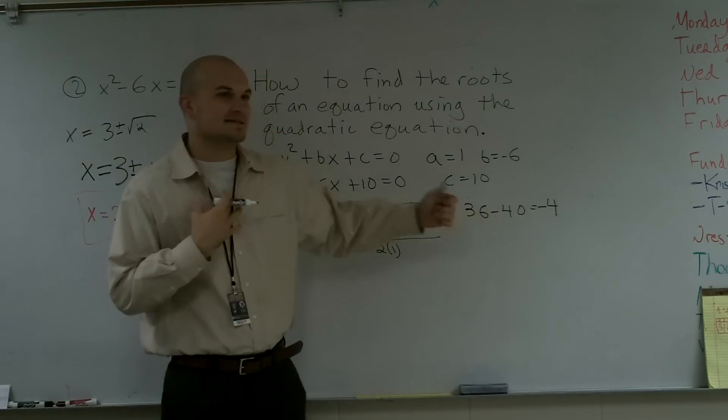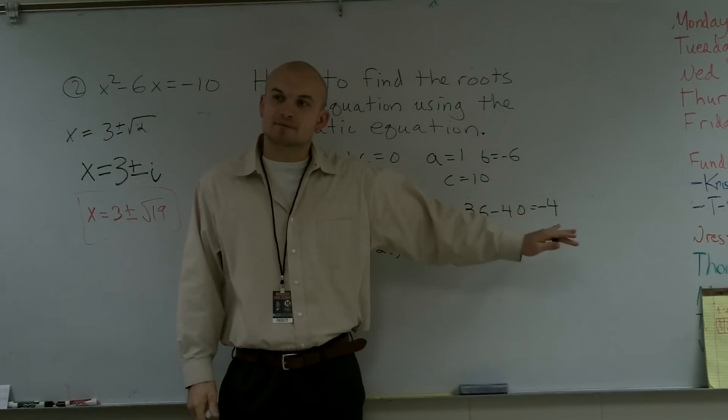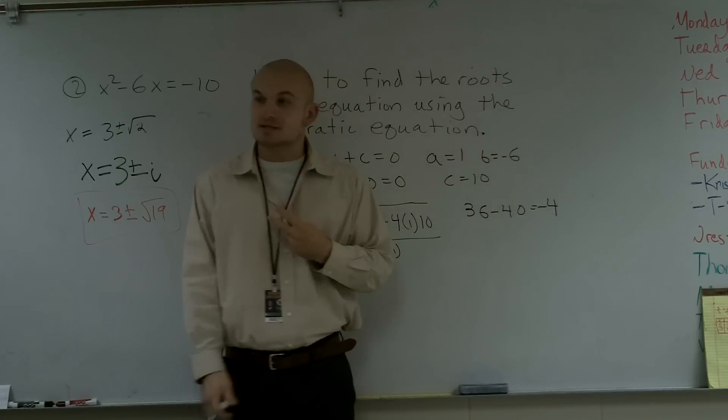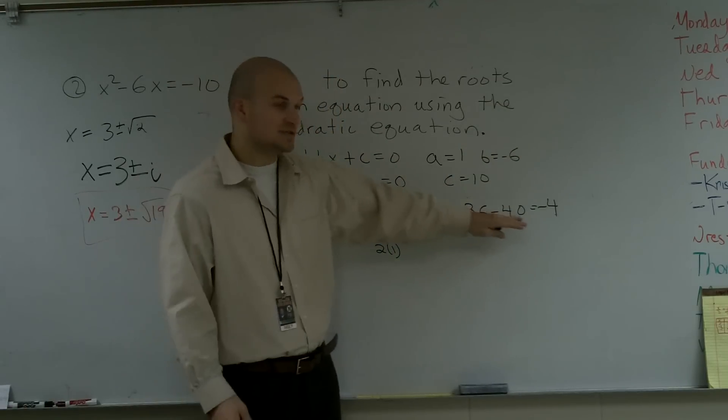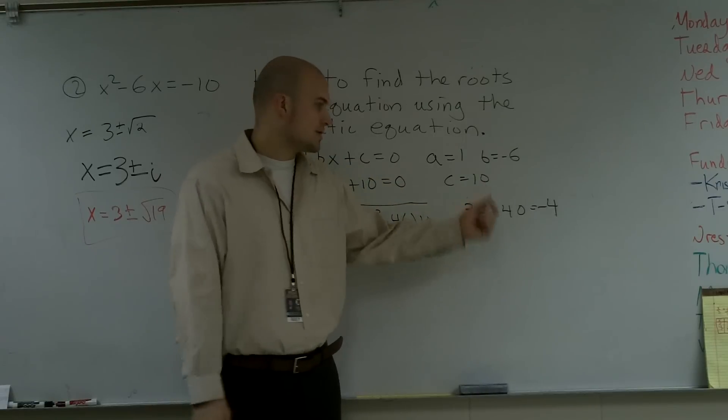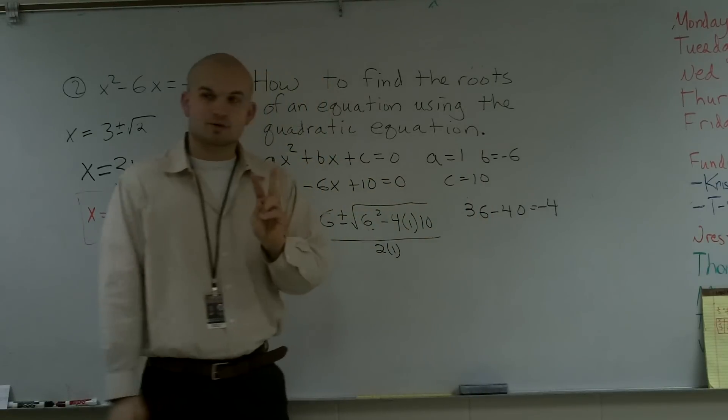So now, if you guys can remember, whenever you have a negative number as your discriminant, you know you're going to have two complex solutions. And a couple things. When it's positive, that means when it's greater than zero, and it's a square number, you're going to have two real rational.